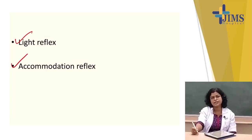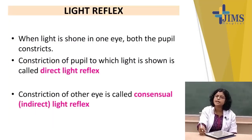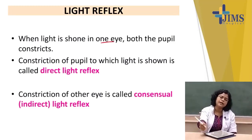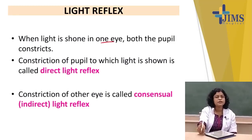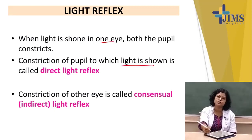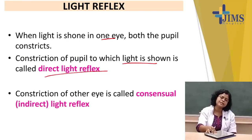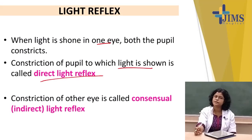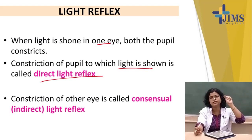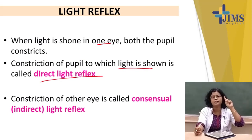First, light reflex. When light is shown in one eye, both pupils constrict. Constriction of the pupil to which the light is shown is known as direct light reflex. I am putting the torch here and looking for the constriction of the pupil here — that is direct light reflex.